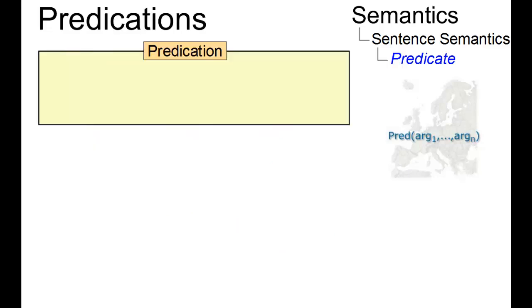So, predications consist of two basic elements, predicates and their arguments. Each predication may have only one predicate, but may have one or more arguments.